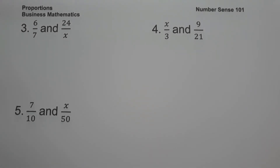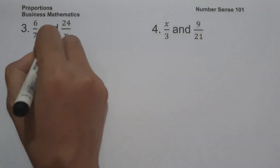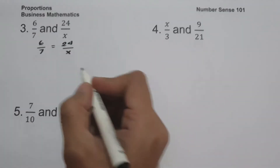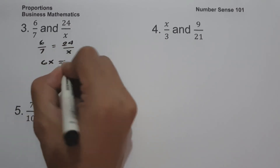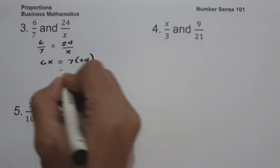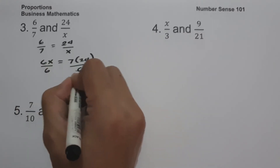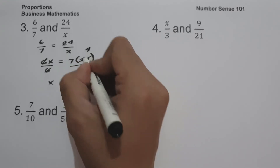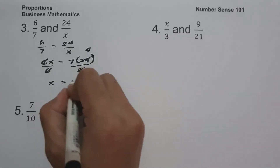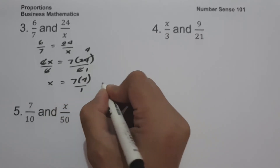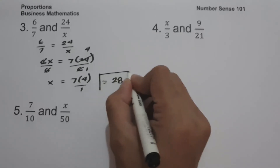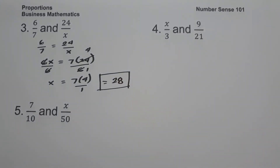On example number three, we have 6 over 7 and 24 over x. Setting up 6 over 7 equals 24 over x, cross multiplying gives 6x equals 7 times 24. Dividing both sides by 6, since 24 and 6 are divisible by 6, 24 becomes 4 and 6 becomes 1. So x equals 7 times 4, which is 28. This is the value of x.